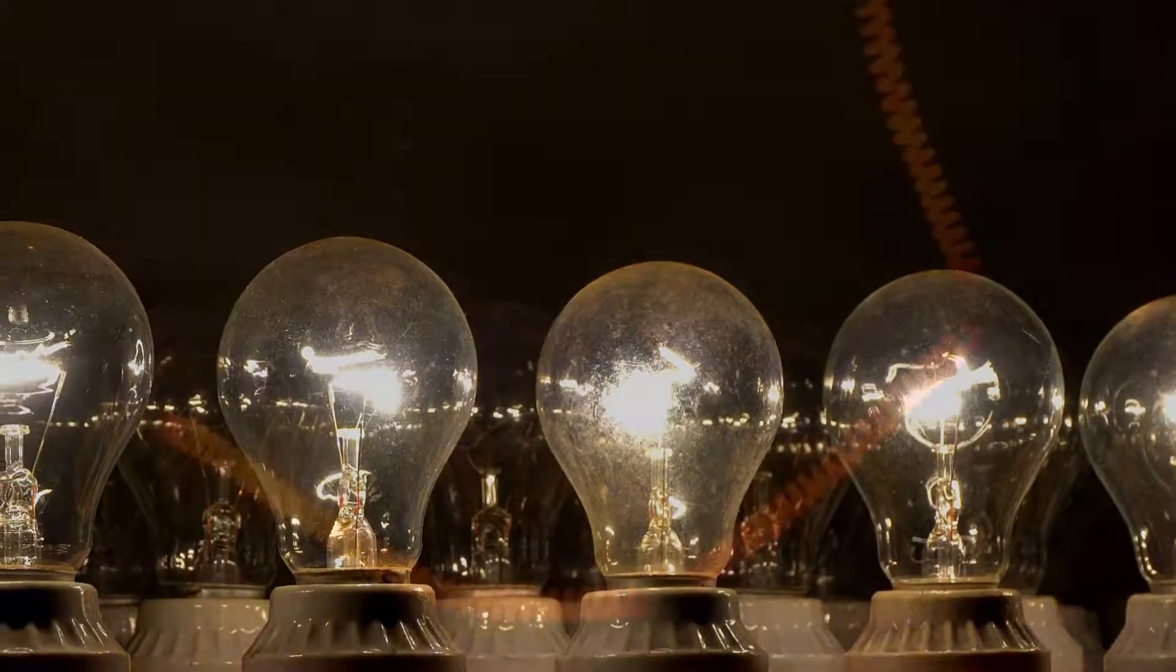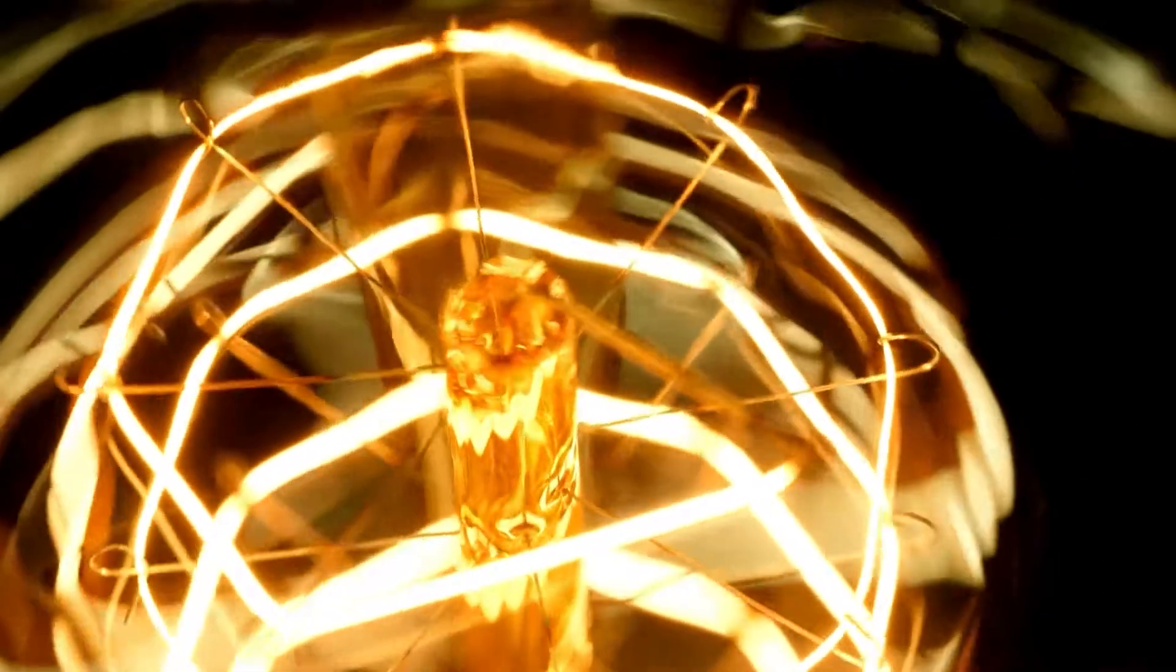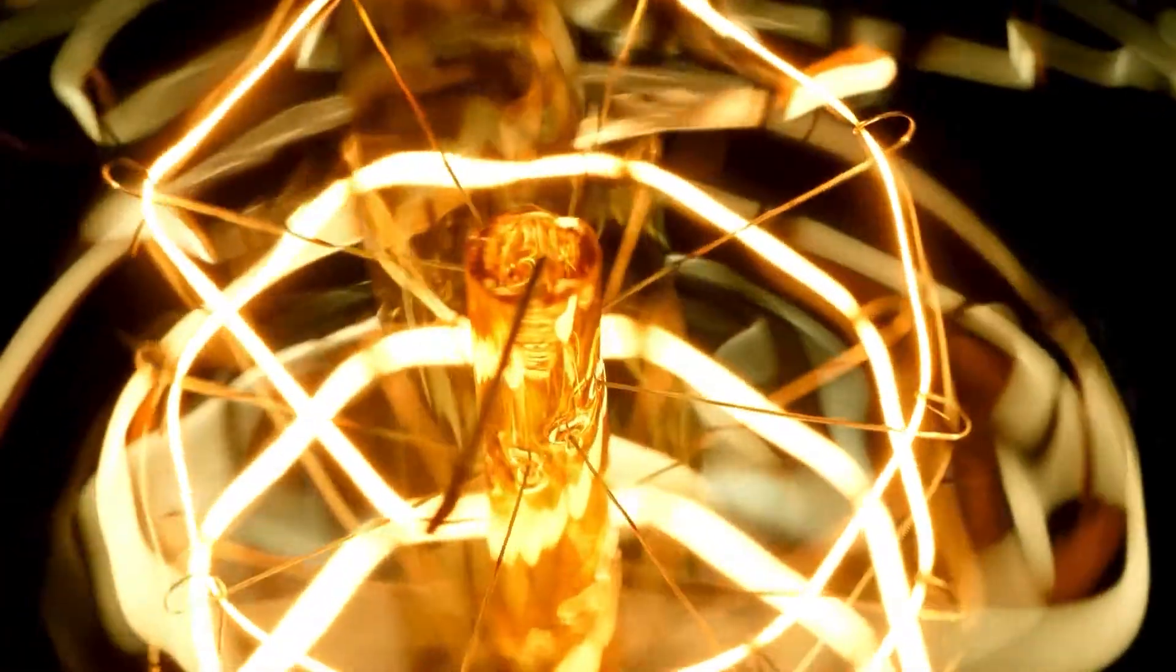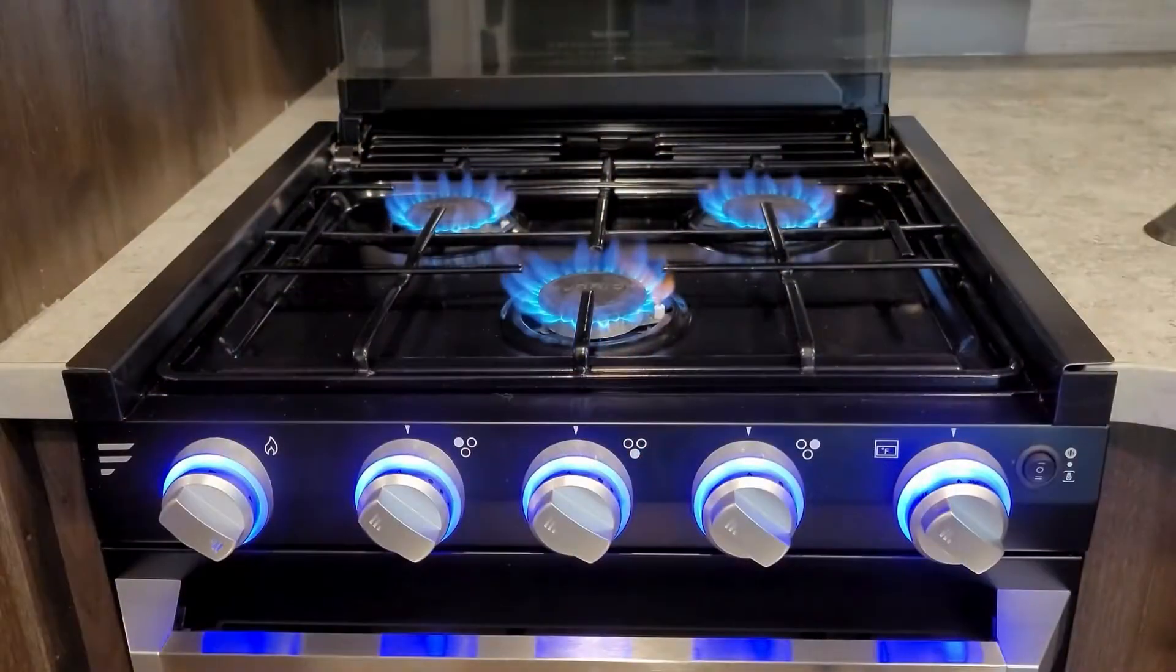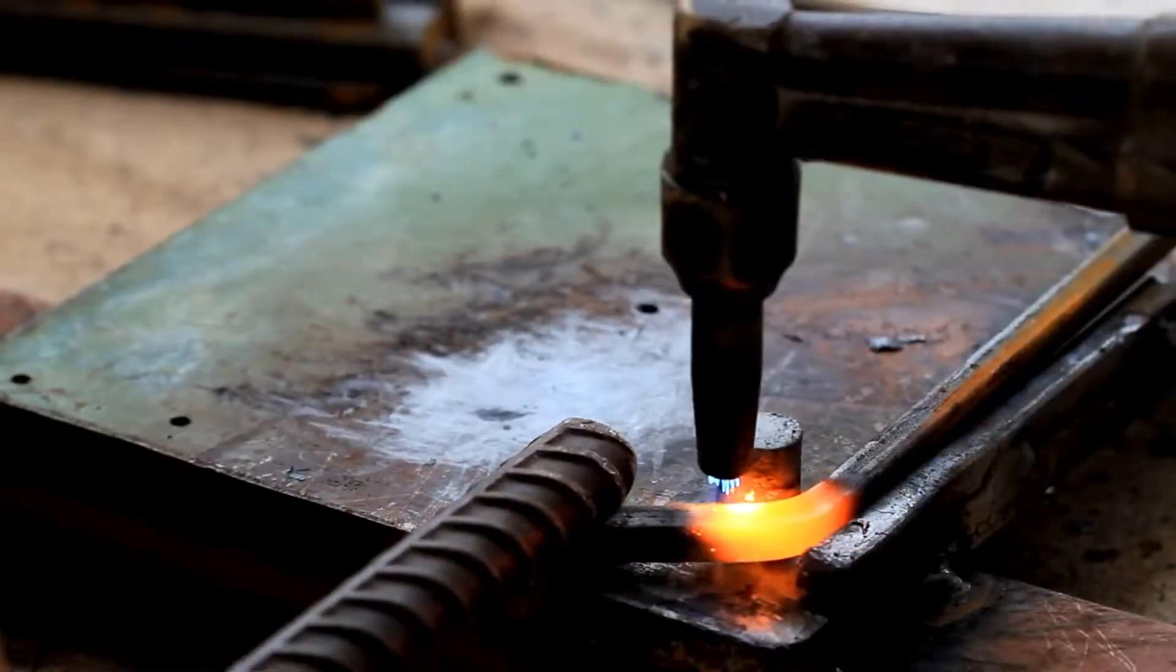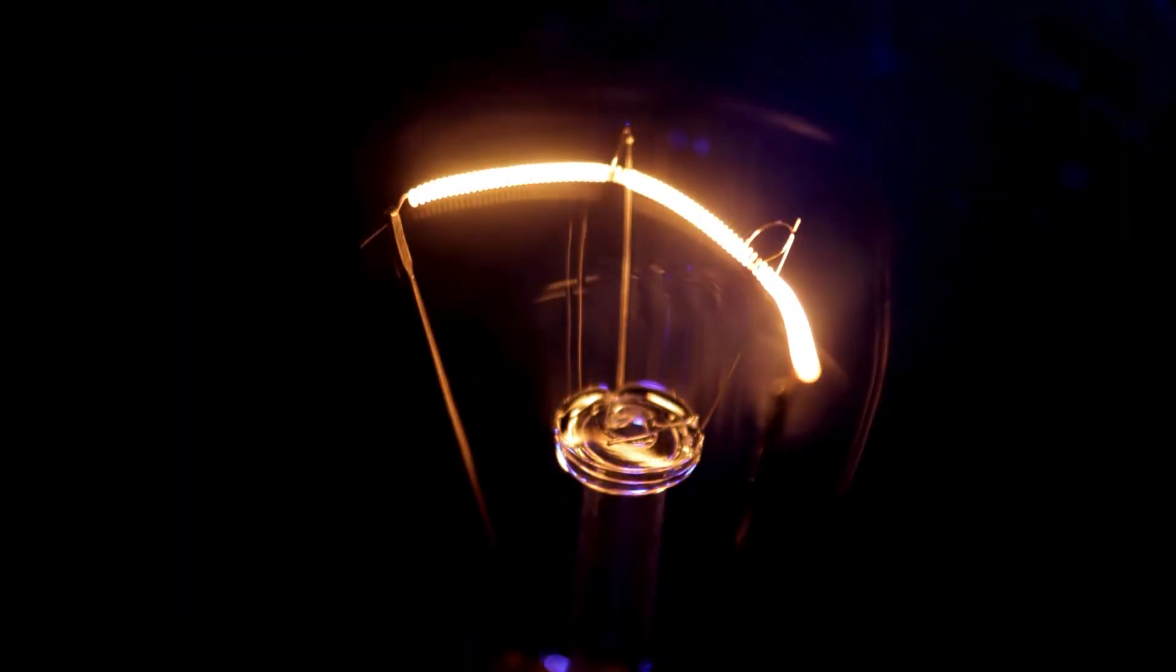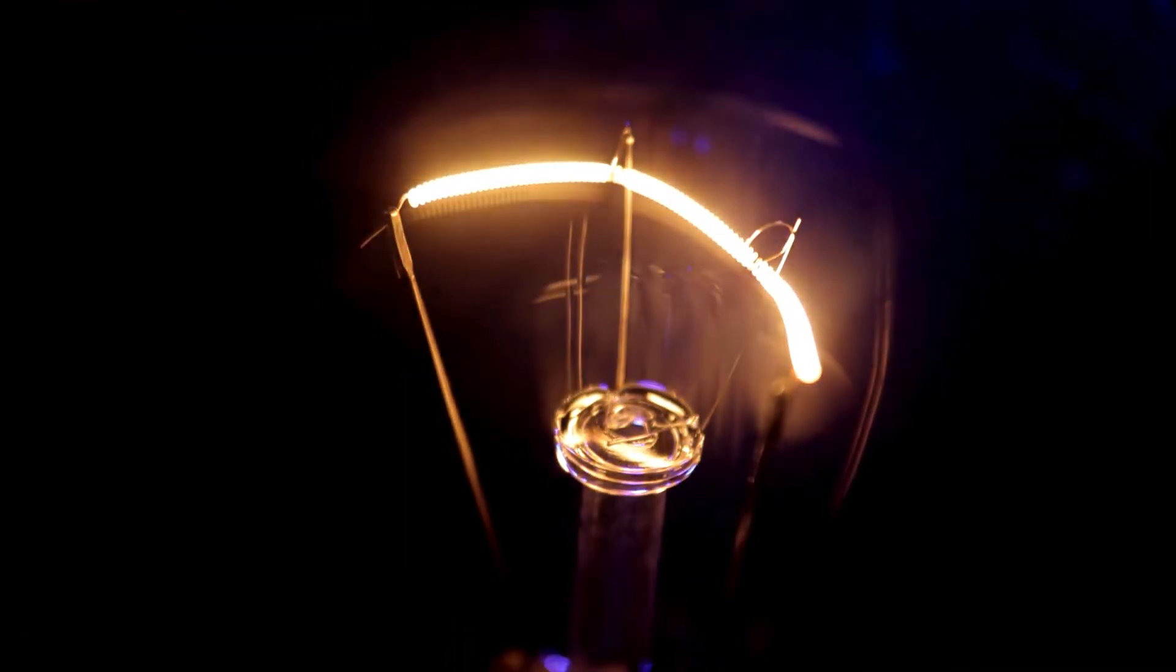The fascinating part is that the flow of electricity meets resistance within the filament. This resistance causes the filament to heat up, and it gets really hot, even hotter than a cooking stove. The magic moment happens when this filament gets so hot that it starts to glow. We call this glow incandescence. Just like a piece of metal turns red when heated, the glowing filament emits visible light, making everything around you visible.